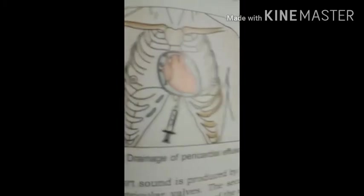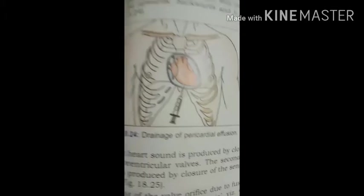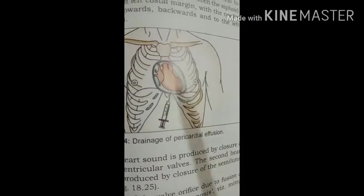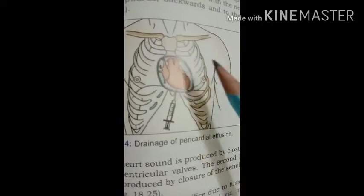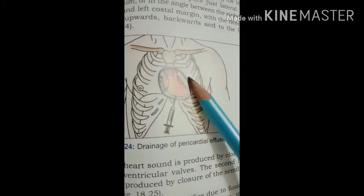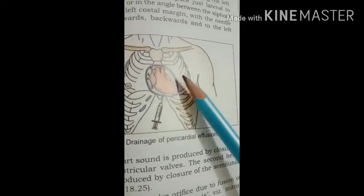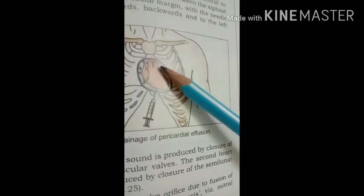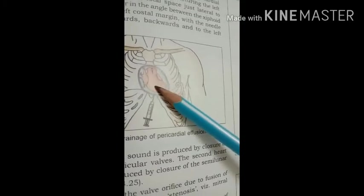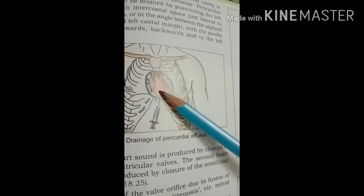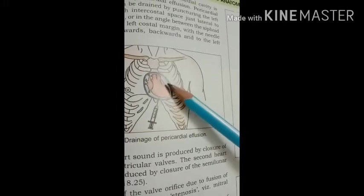Pericarditis means inflammation of the serous pericardium. If inflammation occurs, it causes accumulation of serous fluid in the pericardial cavity, which compresses the thin walls of the atria, interfering with filling of the heart during diastole and decreasing cardiac output. If fluid is collected in this region, the heart cannot get sufficient space to dilate when blood enters, and this clinical condition is called cardiac tamponade.